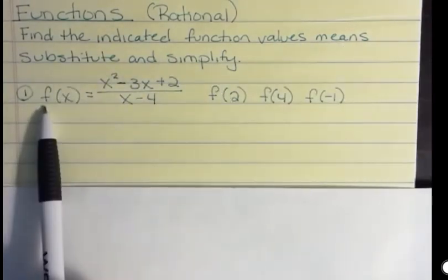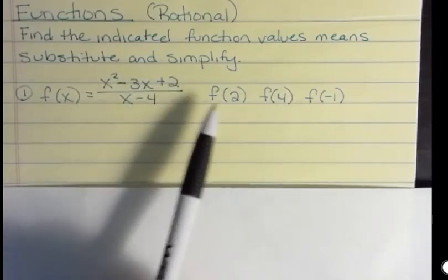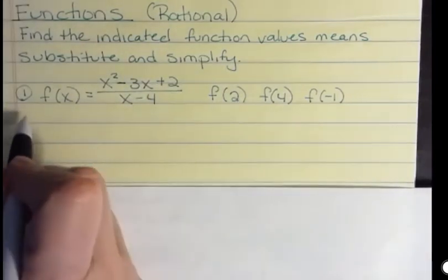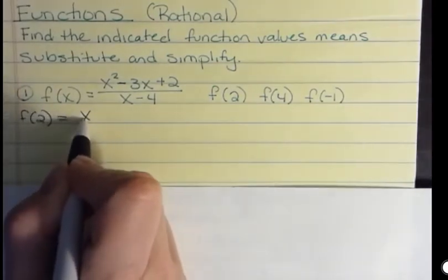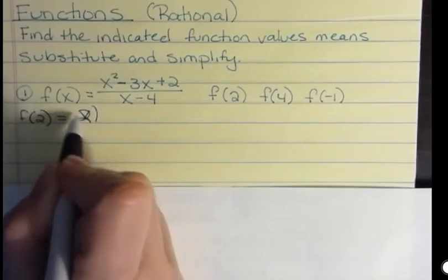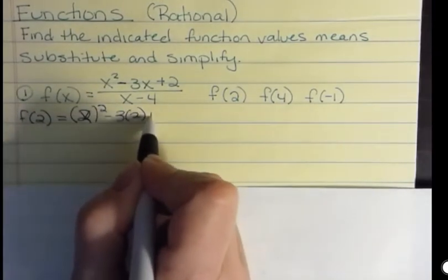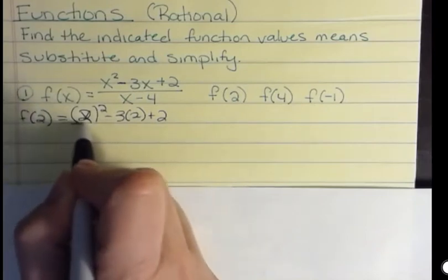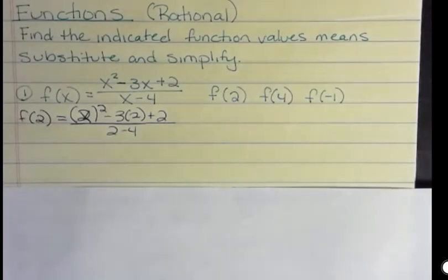So here's your function f(x), and this is the definition of your function, and they're saying find f(2). So to find f(2), you're going to take that function and you're going to replace the x with 2 everywhere you see an x. So instead of x, put a 2 in for x and then simplify. That's all they're asking you to do.